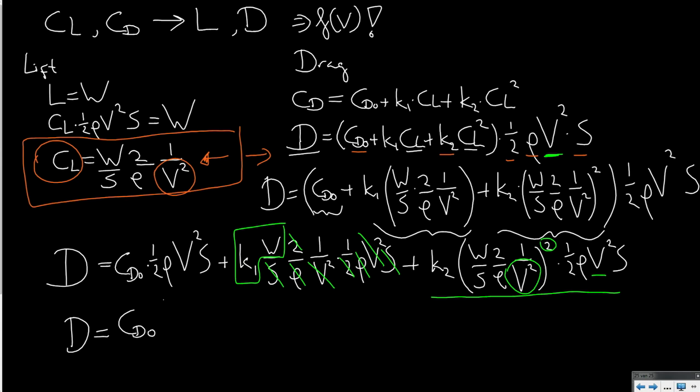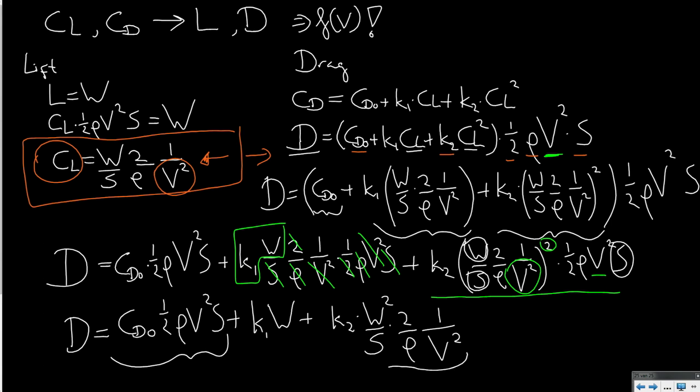Let us write what we now have in a slightly more simplified form. We have drag CD0 half rho v squared S, we have K1 times W, and if I write out the final term, I will obtain K2 times W squared. I am left with one wing surface area, I am left with 2 divided by the air density, and I am left with 1 over v squared. And essentially I now have a part of zero lift drag and I basically also have lift induced drag on the right hand side.